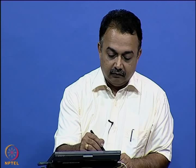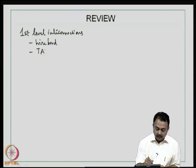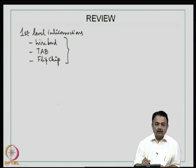We will begin with the review of the last class topics. If you can recollect, we looked at first level interconnections. What are those first level interconnections? Basically, it is wire bonding or wire bond, the second one is tape automated bonding or TAB, and the third one is flip chip. These are the three basic chip connection choices and they form the first level interconnections.